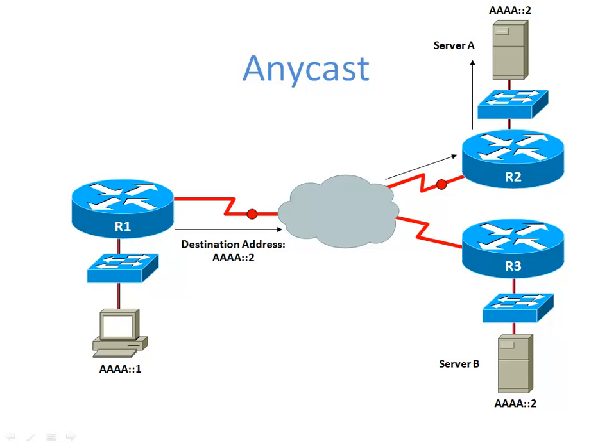The third data flow type is anycast — one-to-nearest communication, which did not exist in IPv4. With anycast, a single IPv6 address is assigned to more than one device. When sending to that IP address, the router decides which device appears to be closest and routes the traffic to the nearest one. In the example, AAAA::1 is sending to AAAA::2, but two servers — server A and server B — both share that address. Router R1's routing table considers the path via R2 to be a better, nearer path, so the packet is routed to server A.